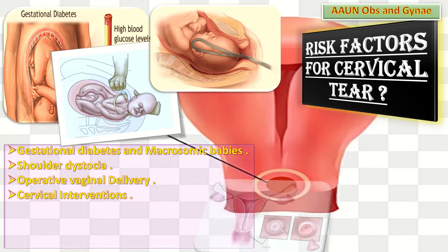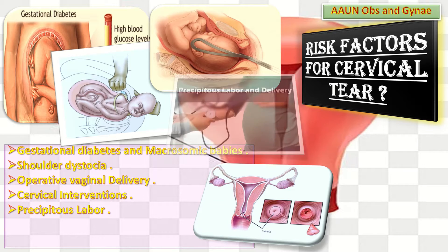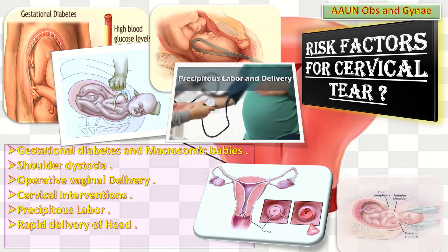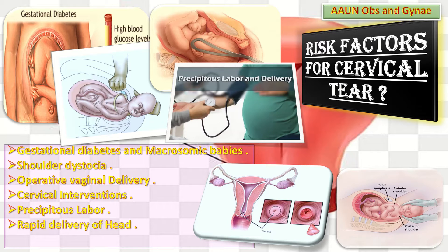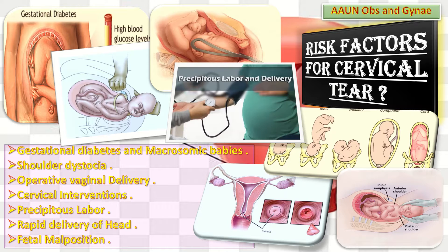Another cause is cervical interventions — if there is history of cerclage, cervical colonization, as well as dilatation and evacuation, there is increased risk of cervical tear. Another cause is precipitous labor, defined as expulsion of the fetus within less than three hours of commencement of regular uterine contractions. Further causes include rapid delivery of the head in breech presentation, and fetal malposition such as occipitoposterior position.